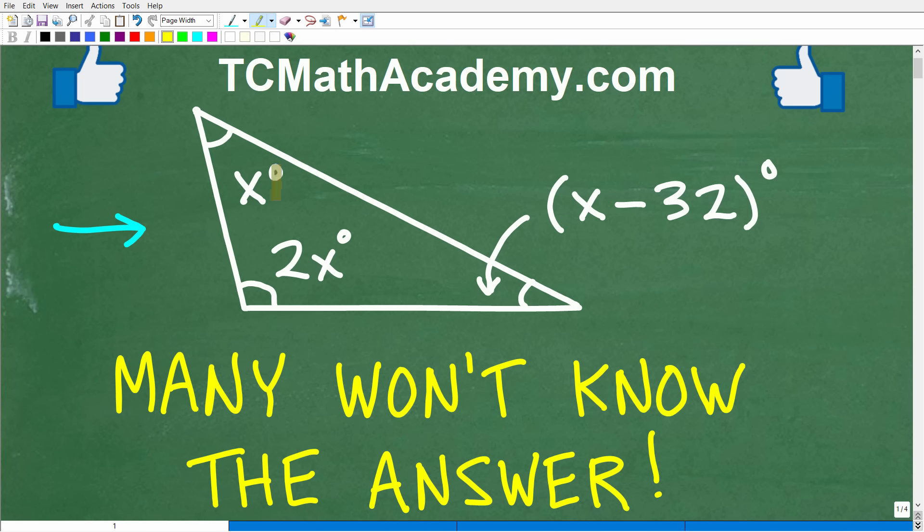And the question here is the following. We have three angles in this triangle. This angle right here is x degrees, this angle here is 2x degrees, and this angle right here is x minus 32 degrees. And what we want to do is find the actual angles of this triangle.